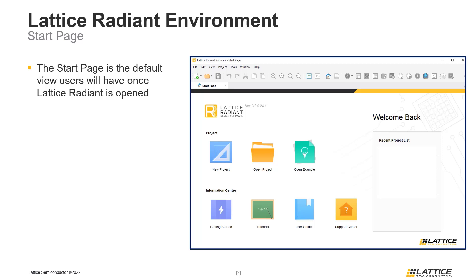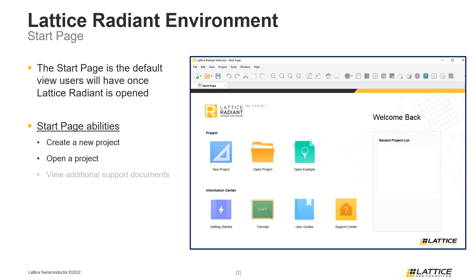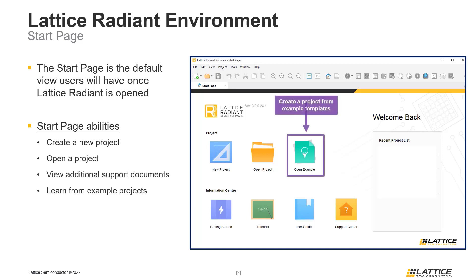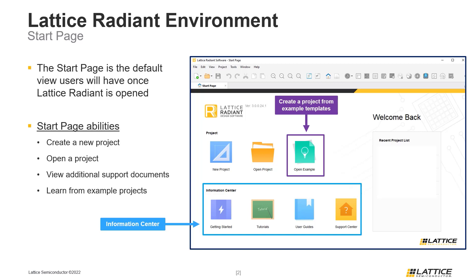The start page window can be used to do a variety of things, like create or open a project, view additional documentation, or try out Radiant with a template project. Radiant's information center contains several useful icons. The Getting Started, Tutorials, and User Guides icons can be used to help users learn more about Radiant. The Support Center icon can be used to submit technical support requests, access Lattice's answer database, and learn more about the process for requesting licenses.